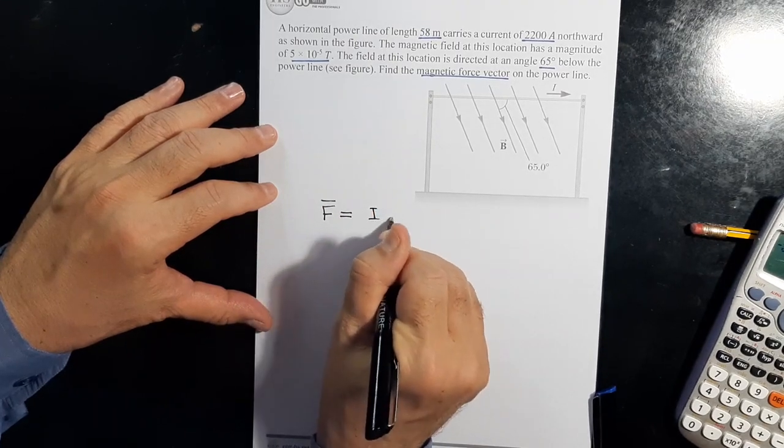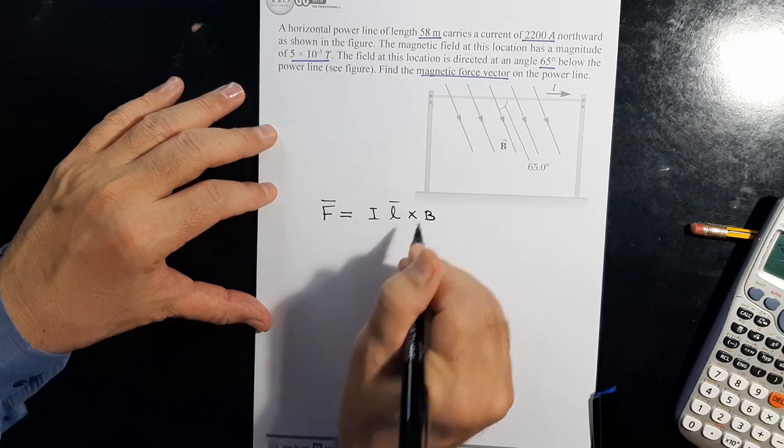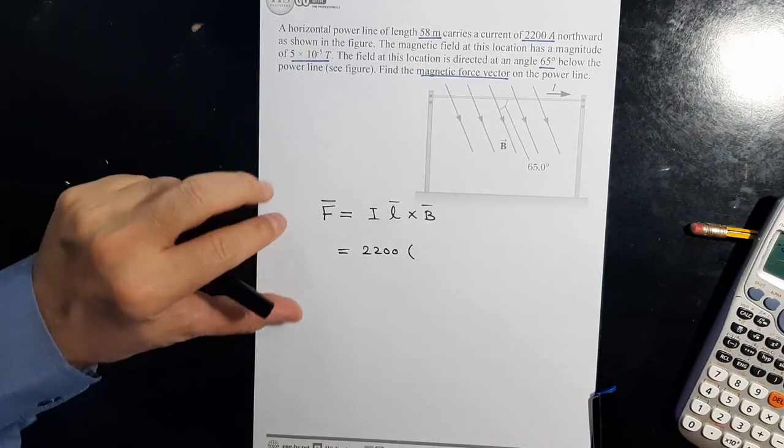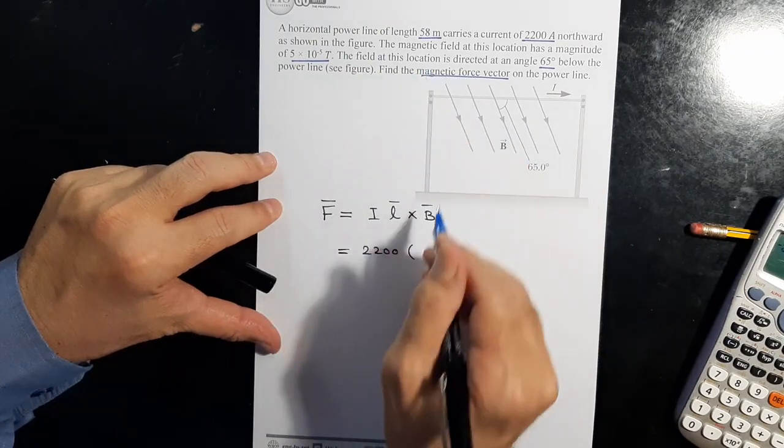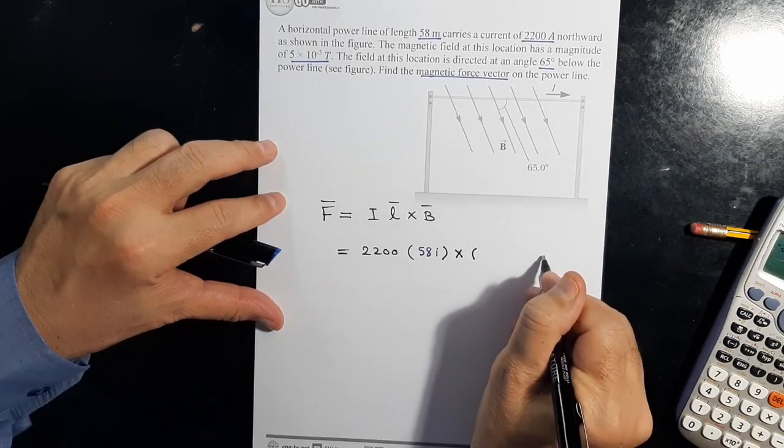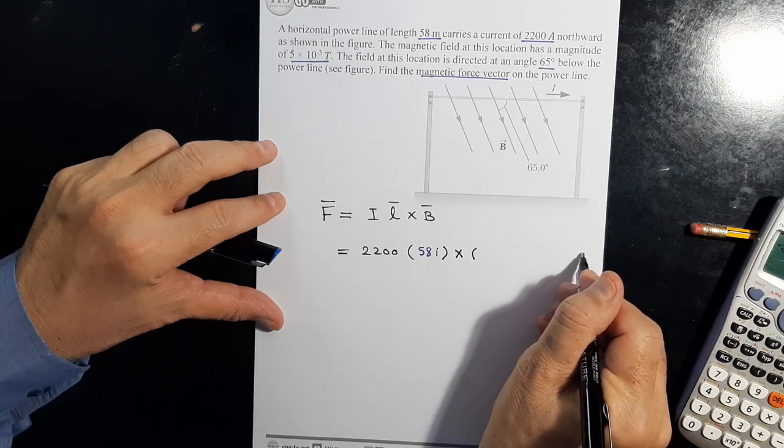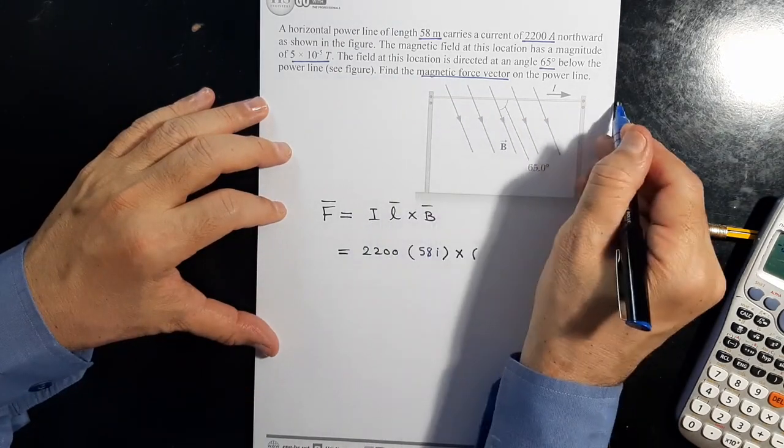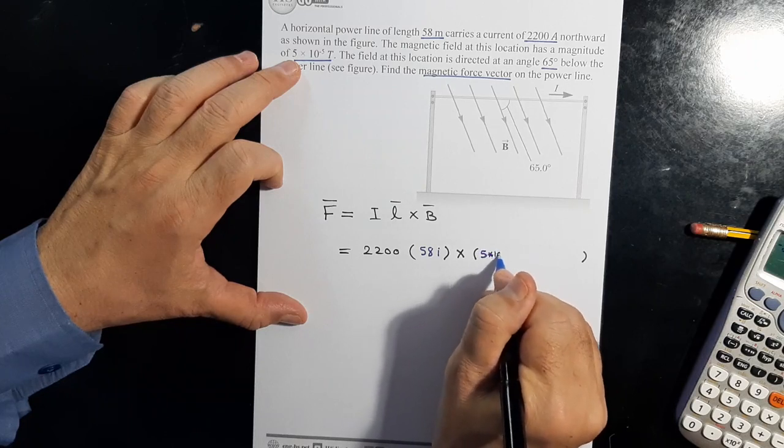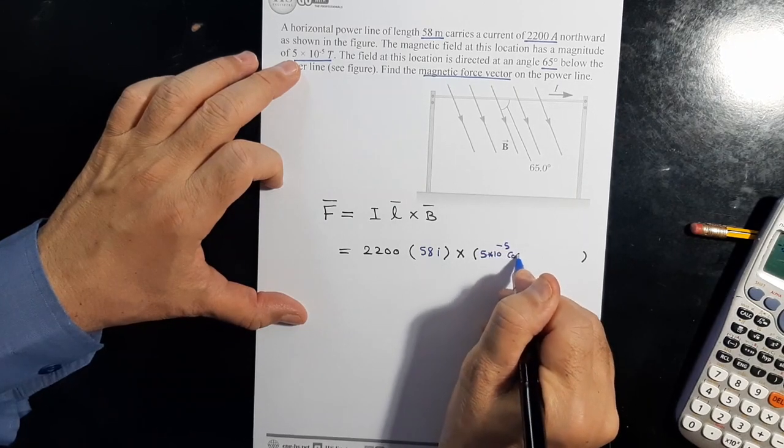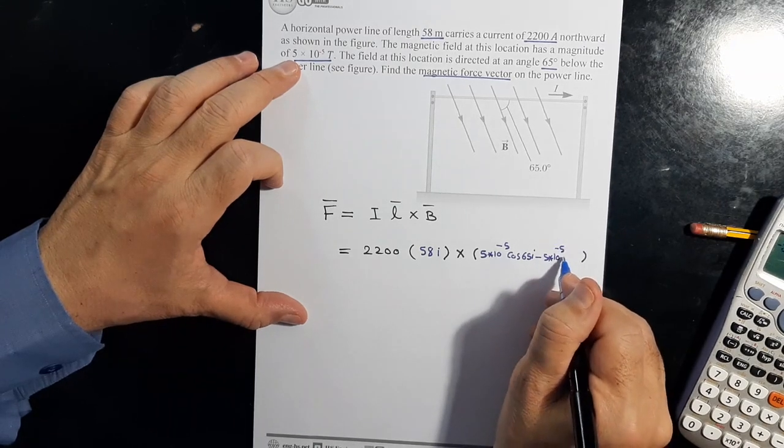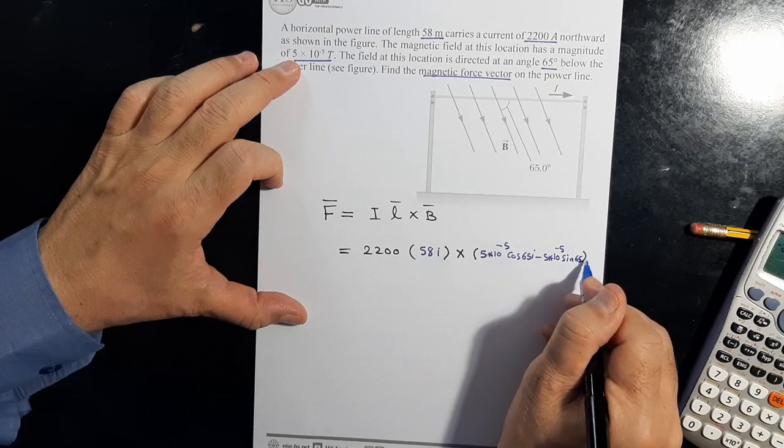F equals I L cross B. I equals 2200, L in the x direction, so 58 i cross... We can decompose B into components in the i and j directions. So 5 times 10 to the minus 5 sine 65 degrees i minus 5 times 10 to the minus 5 sine 65 degrees j.